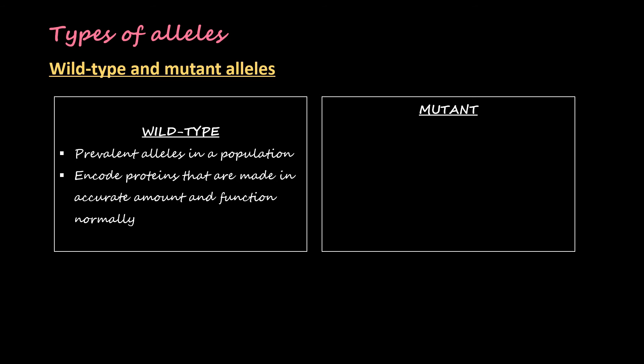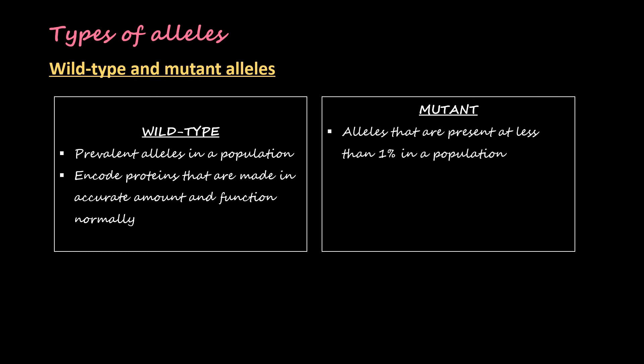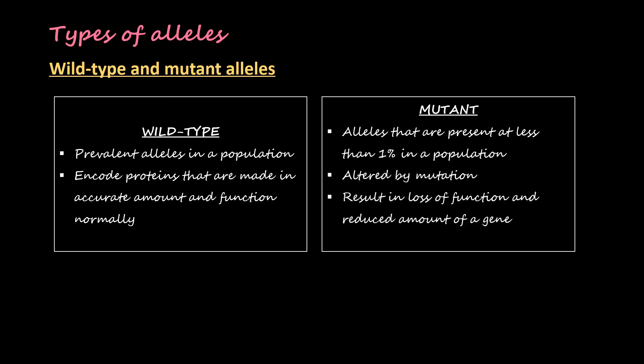The possibility is that there is a mutation in the gene coding for beak color in those birds showing orange color. Mutant alleles are present at less than one percent in a population; they are altered by mutation, result in loss of function and reduced amount of a gene product, and are inherited recessively.